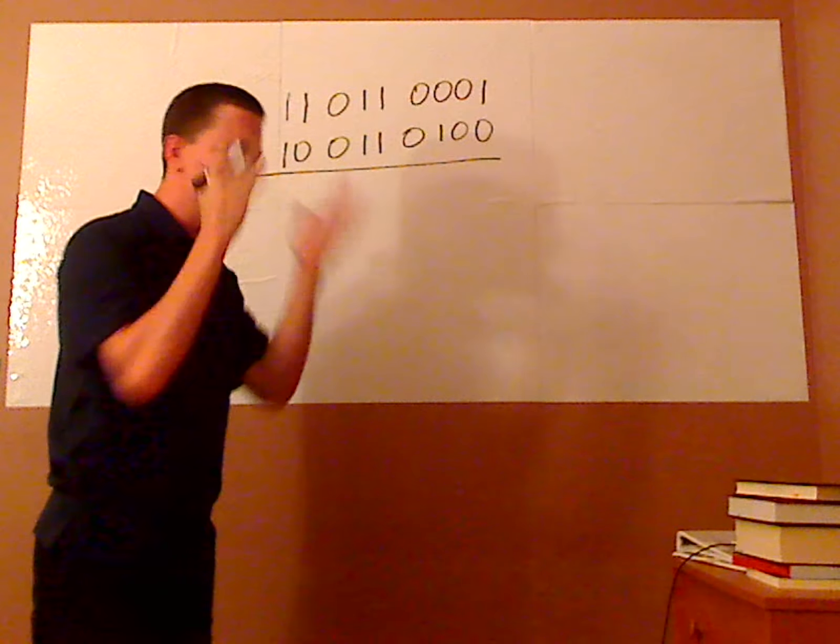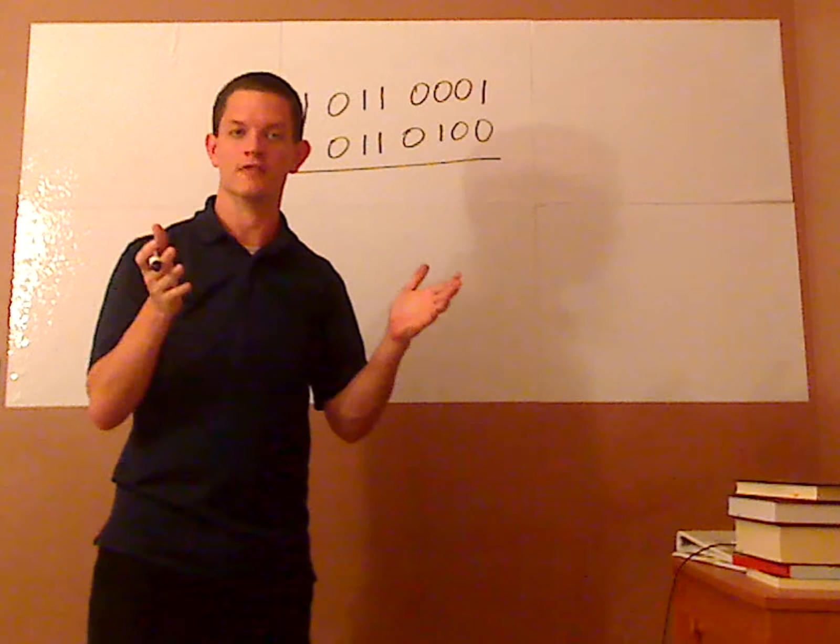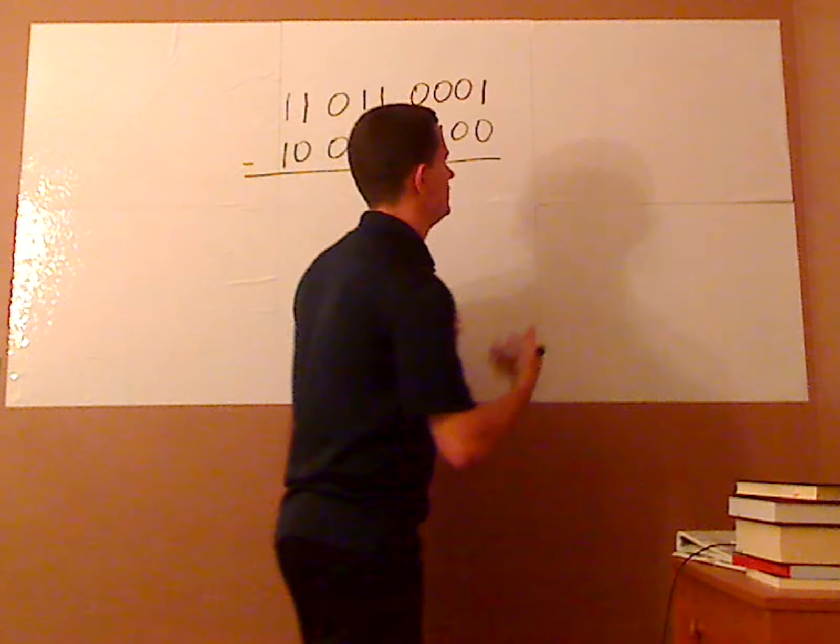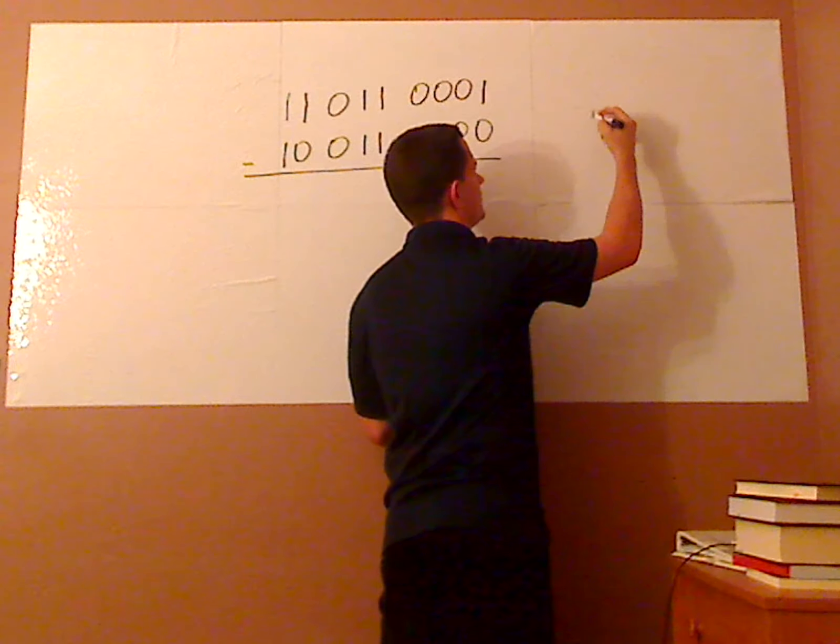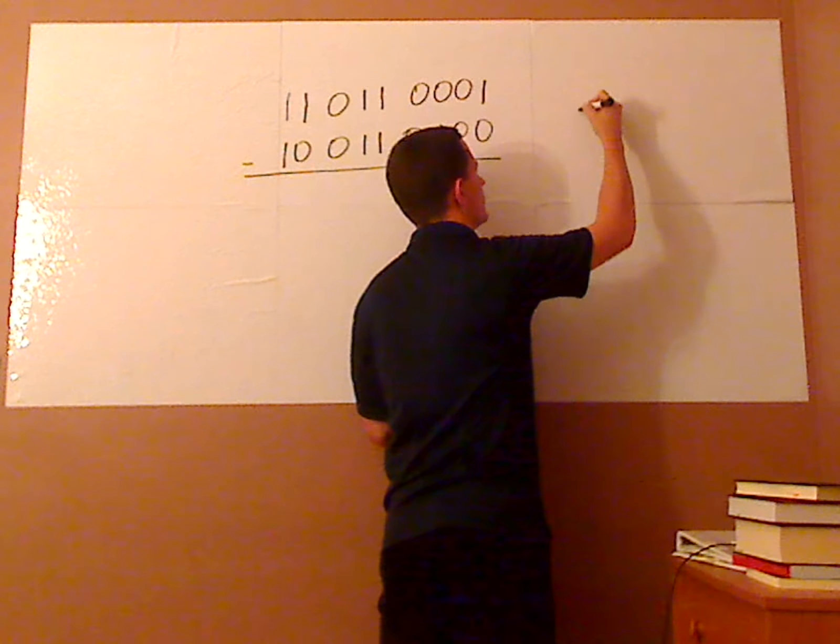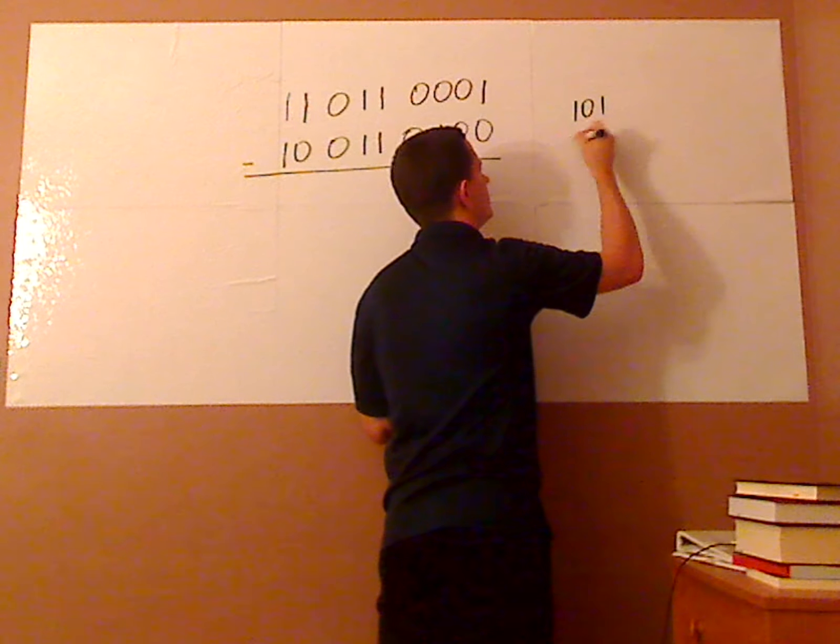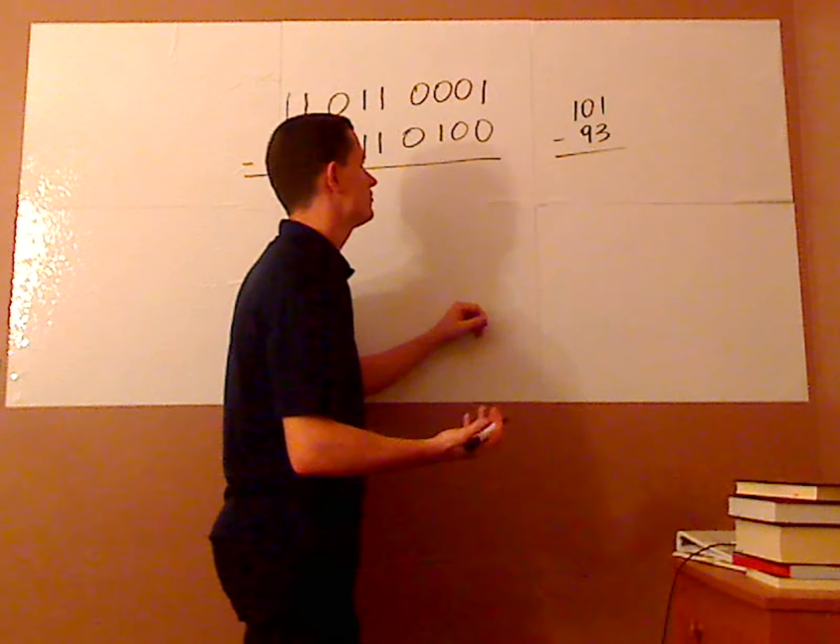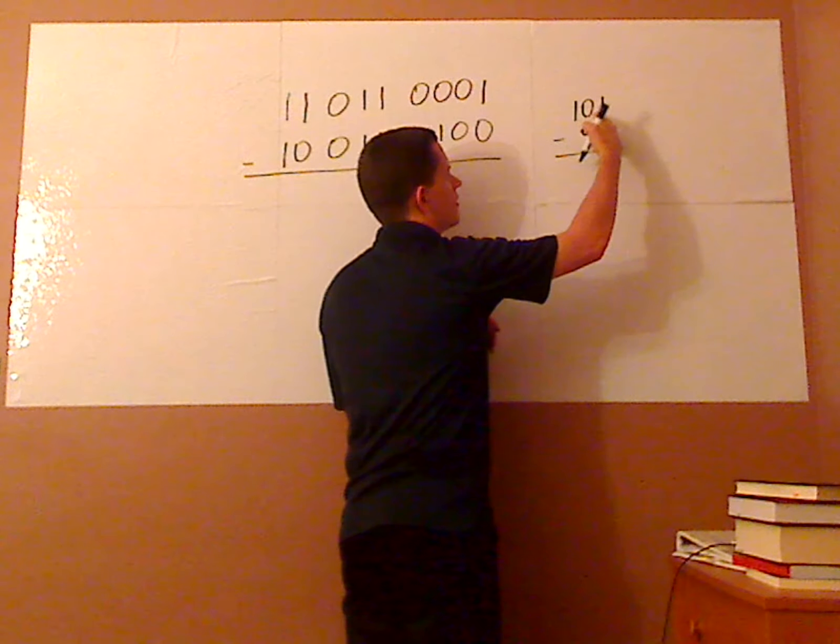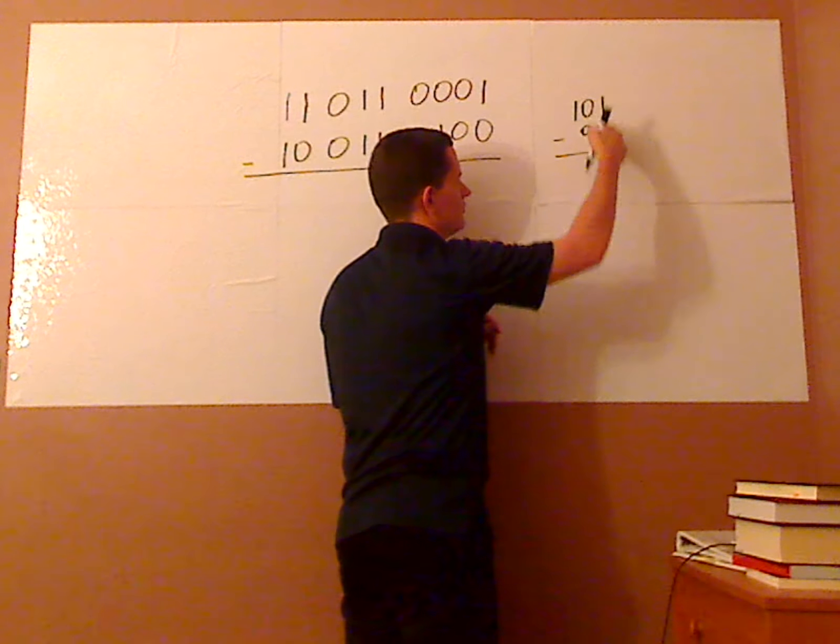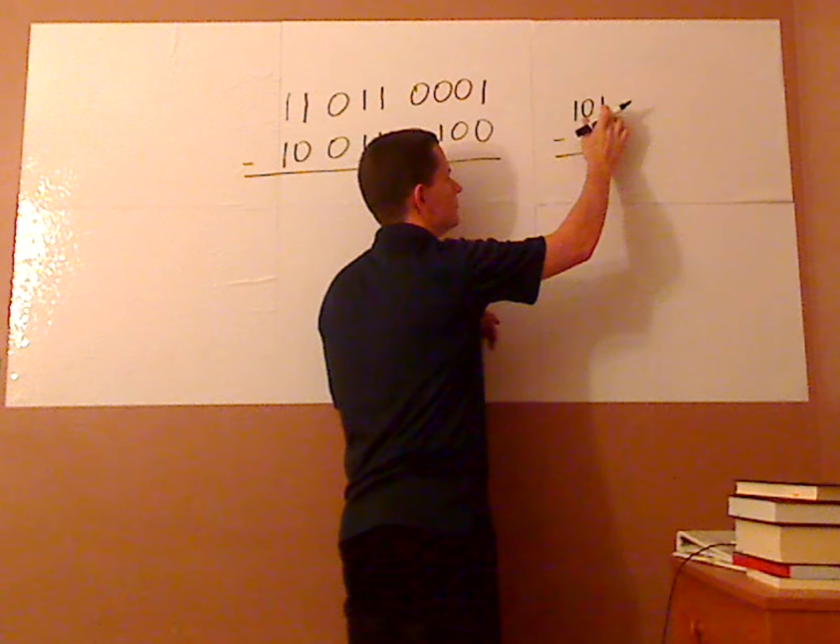Alright, so when you think of subtraction you think of borrowing. So let's look at an easy example first before we tackle this one and that's with decimals because we're really used to that. So if I have 101 minus 93, well that's pretty straightforward. I'm going to need to borrow because I need something here, 1 minus 3 is negative so I need to borrow.